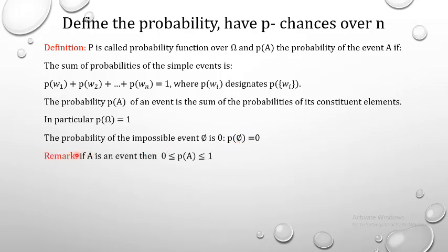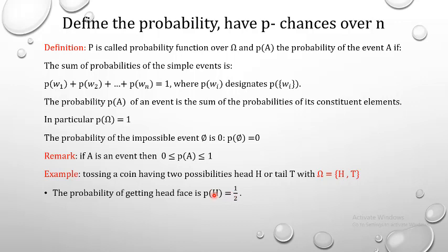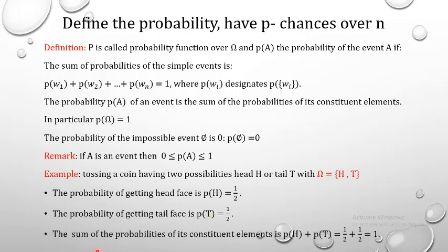Remark: if A is an event, then the probability of A must be between 0 and 1. Example: tossing a coin with omega = {H, T}. P(H) = 1/2 and P(T) = 1/2. The sum P(H) + P(T) = 1/2 + 1/2 = 1.